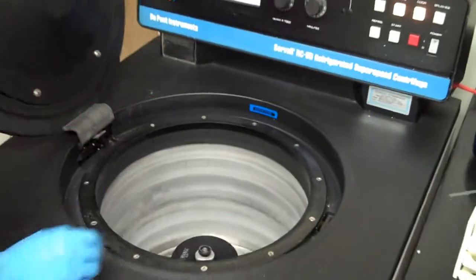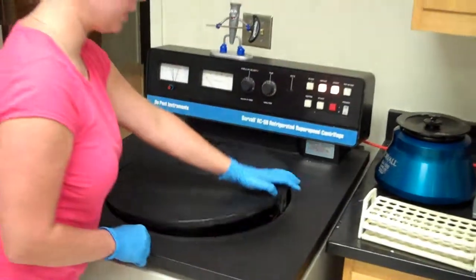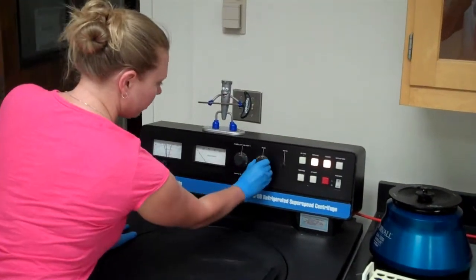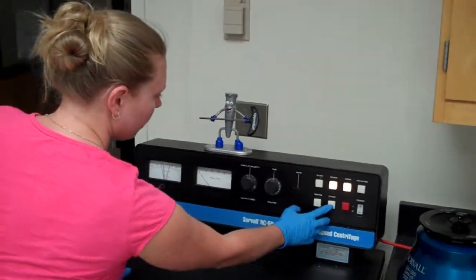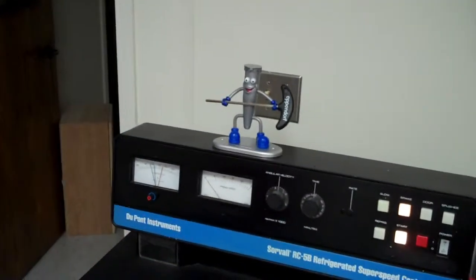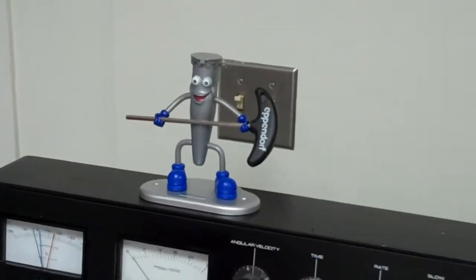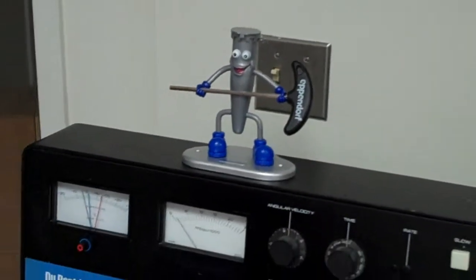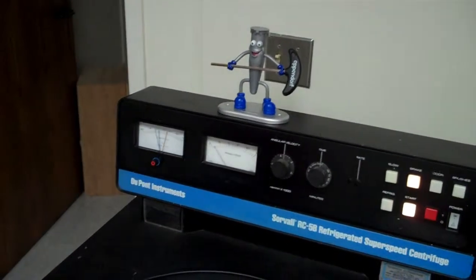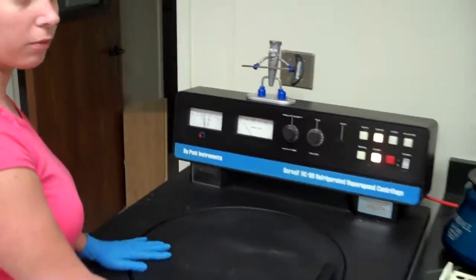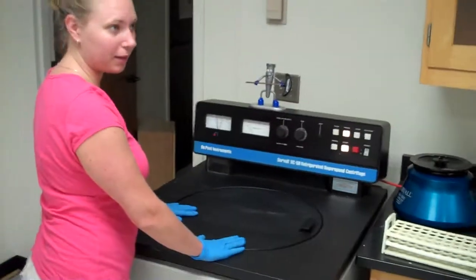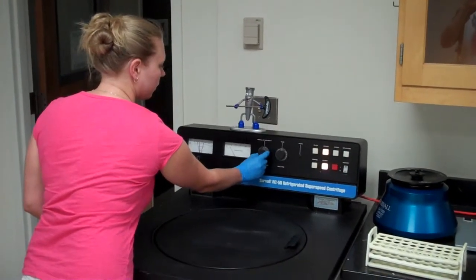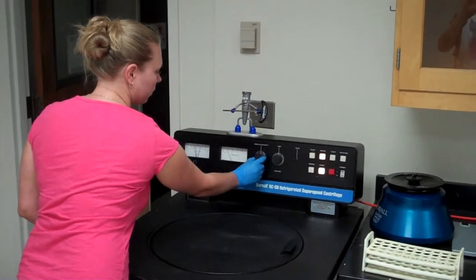Once our rotor is securely in place, close the lid, turn your timer to hold, press start. Always make sure you listen to the centrifuge. If it sounds nice and quiet like this, we know that our rotor is properly balanced. Slowly turn the velocity up to the desired speed.